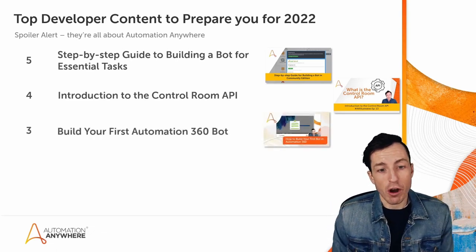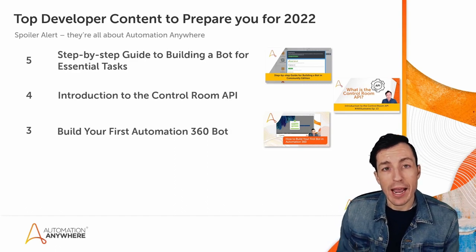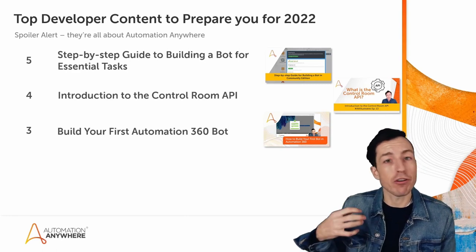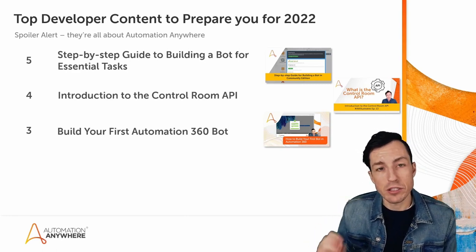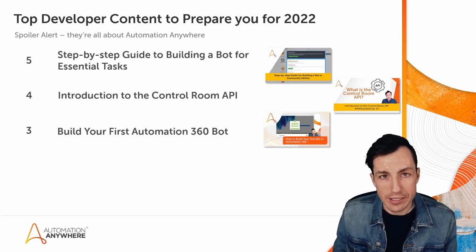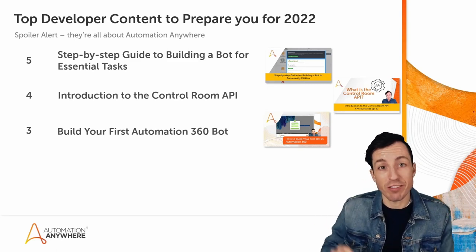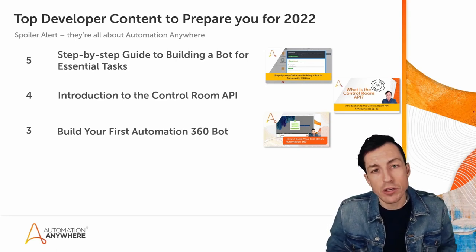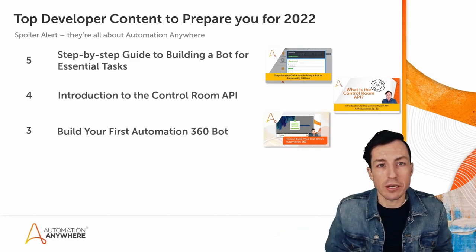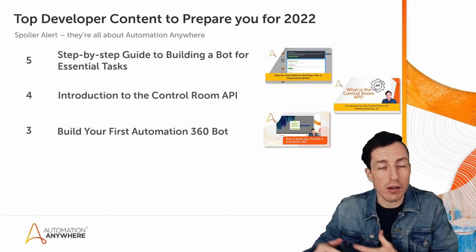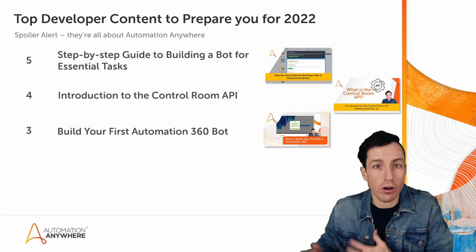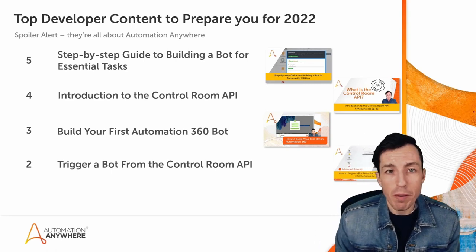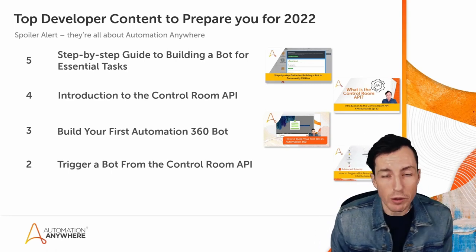Building Your First Automation 360 Bot comes in at number three, and this is a perfect place to get started if you're brand new to RPA. Even if you're not someone who has a ton of development experience, this is the place to start. We introduce the Automation 360 interface and go through the process of building your very first bot that does a very simple launch of a browser and log into a web interface, teaching you those very fundamental skills.